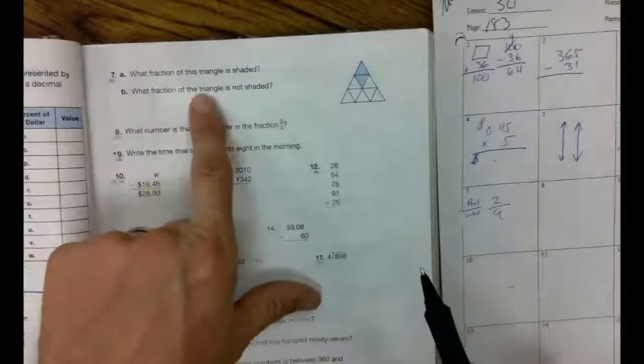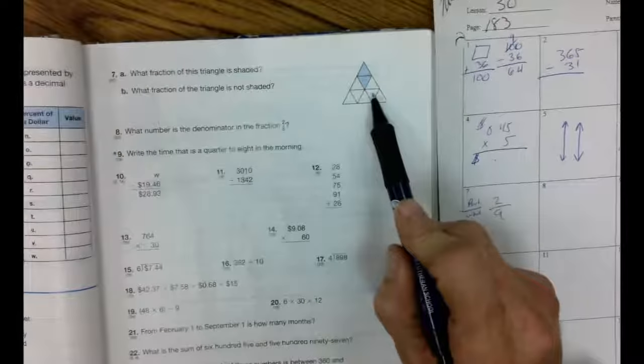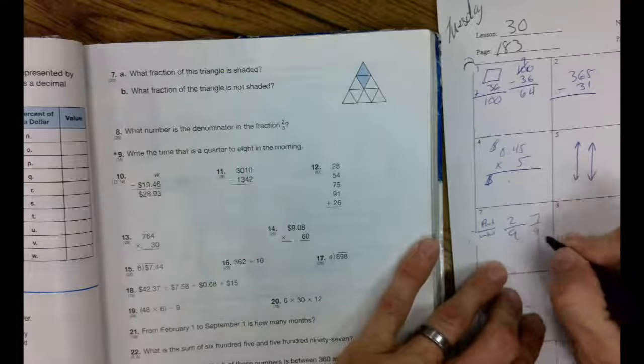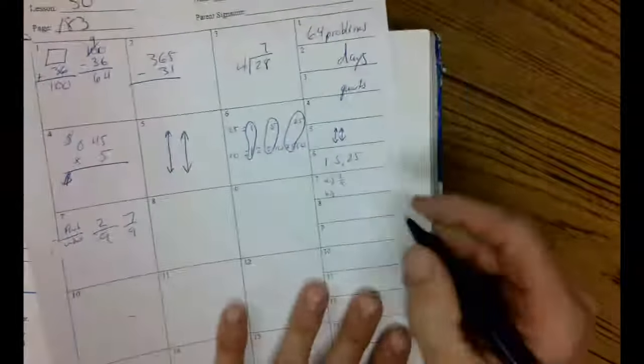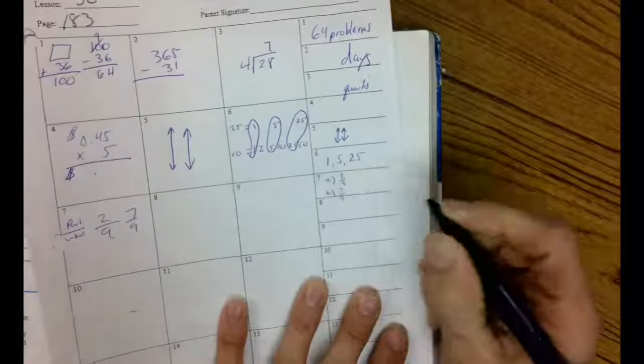And now B, what fraction of the triangle is not shaded? One, two, three, four, five, six, seven. And the ninth doesn't change. So it's seven ninths. So B would be seven ninths.